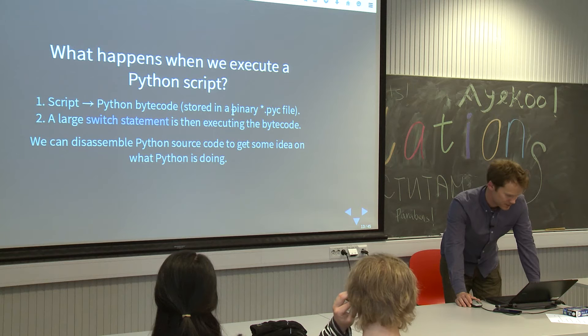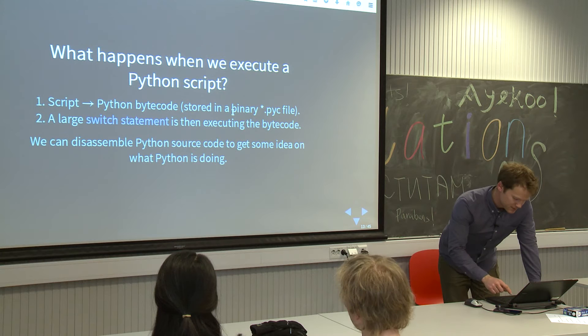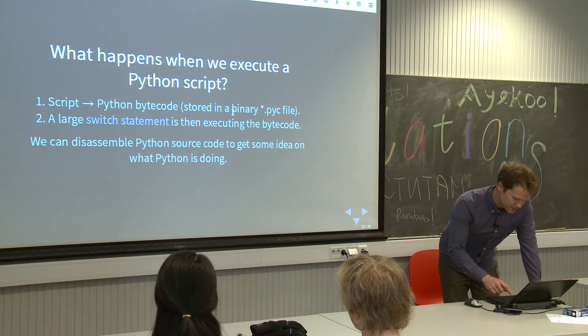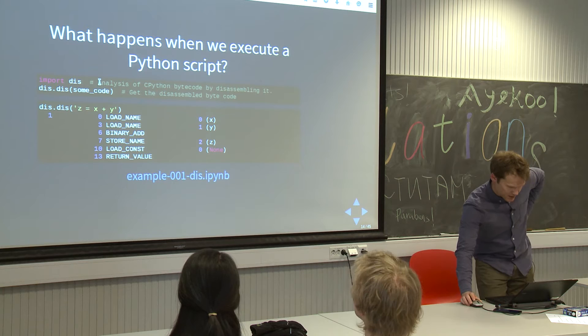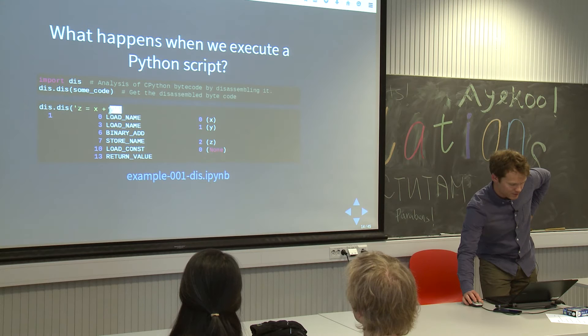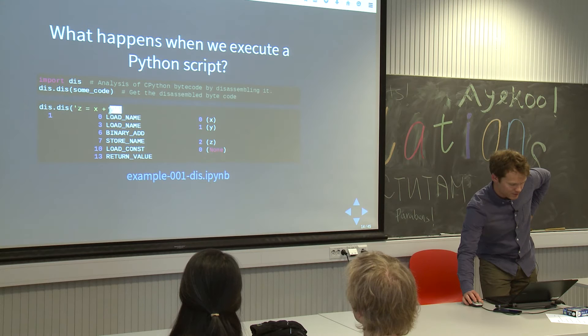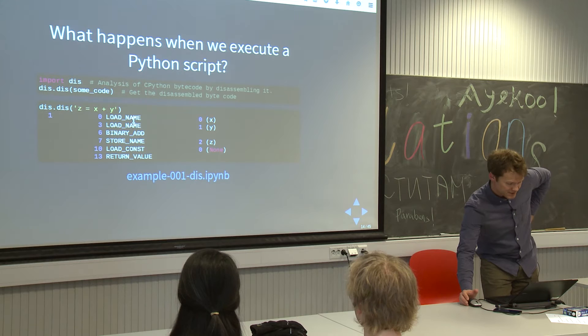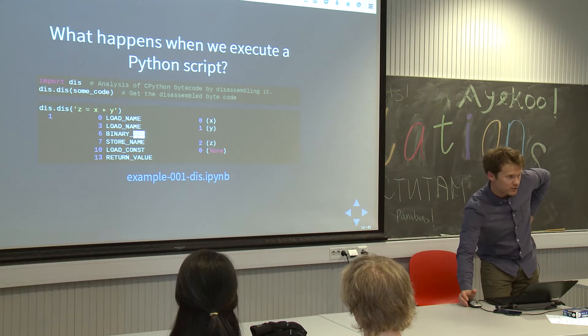This is actually something you can look at if you want to know exactly what Python is doing with some function. There is a module called dis. It can be used to look at what the bytecode for some function you write is actually translated to. This is the typical output if I run it on some function — it will give you a list of operations that Python is doing. For instance, it will load a name, do a binary add, and store that name. These are all operations that CPython is finding in an enormous switch statement.